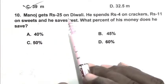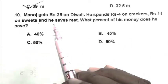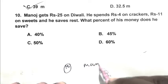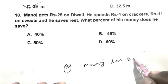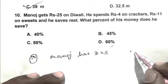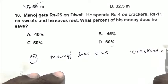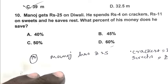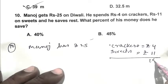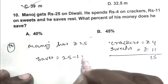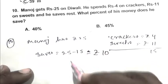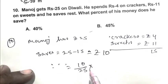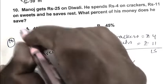Question number 10. Manoj gets Rs. 25 on Diwali. He spends Rs. 4 on crackers and Rs. 11 on sweets and saves the rest. What percent of money does he save? Total expenditure is Rs. 15, so he saves Rs. 25 minus 15, that is Rs. 10. Saving percentage is 10 upon 25 multiplied by 100, that is 40 percent. So A is the right answer.